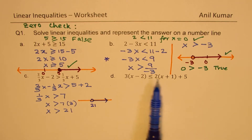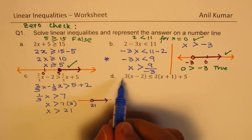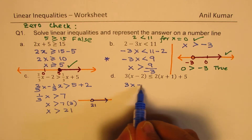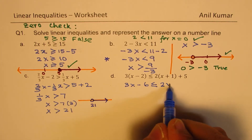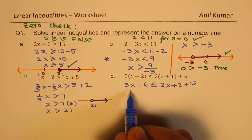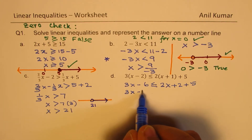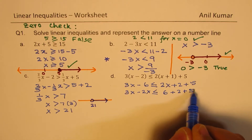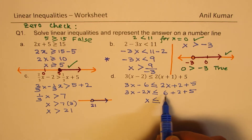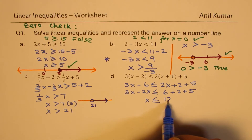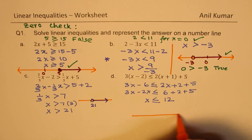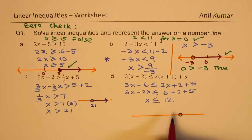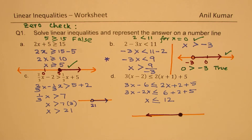For the next part, we open the bracket and solve. Opening the bracket gives 3x minus 6 is less than or equal to 2x plus 2 plus 5. Gathering x terms: 3x minus 2x, and constants on the other side: 6 plus 2 plus 5. So we get x is less than or equal to 12. On the number line, we use a filled-in circle at 12, and 0 is part of the solution.